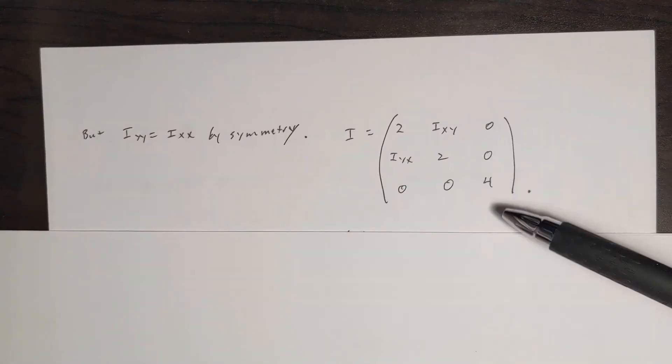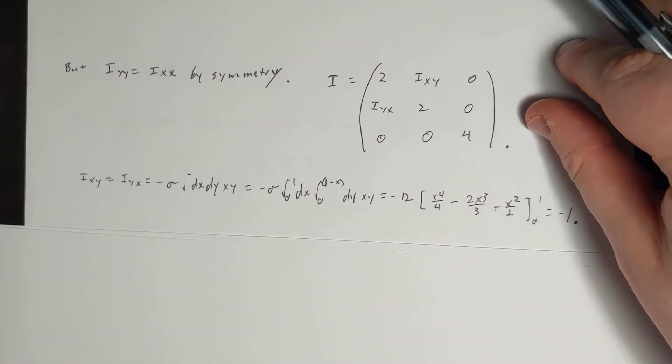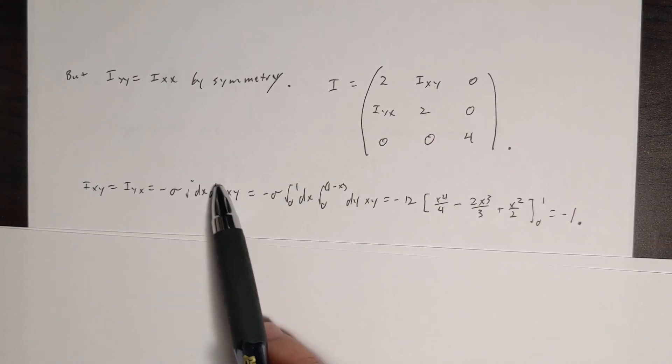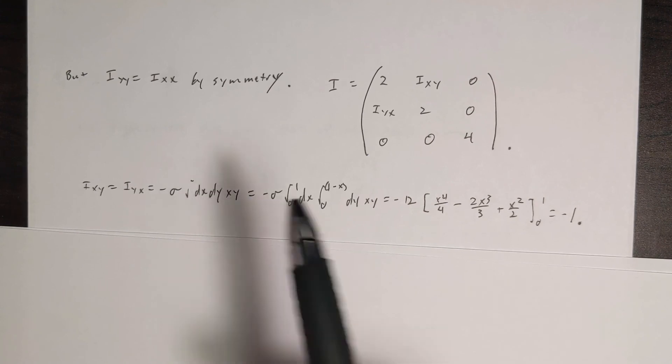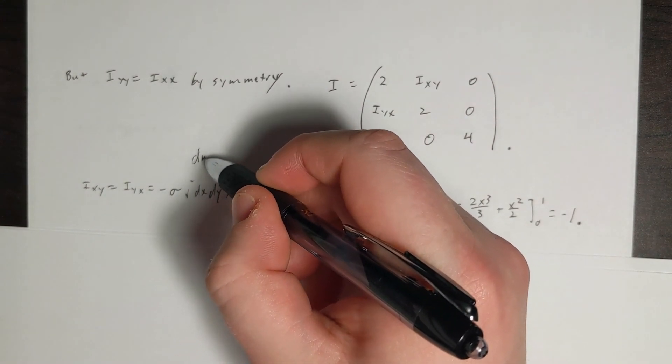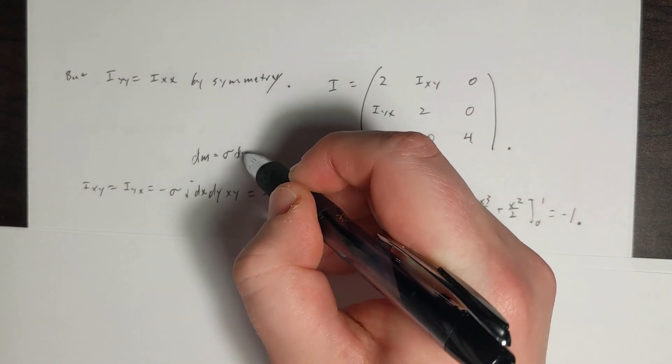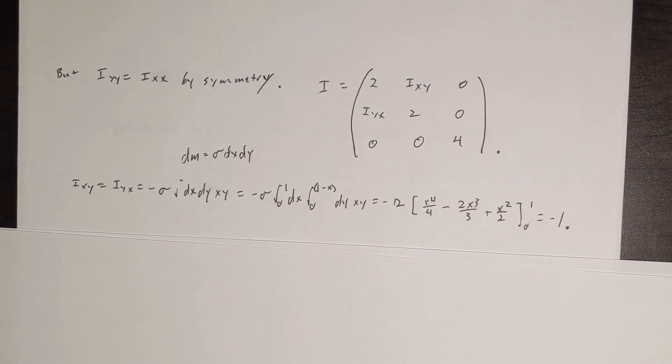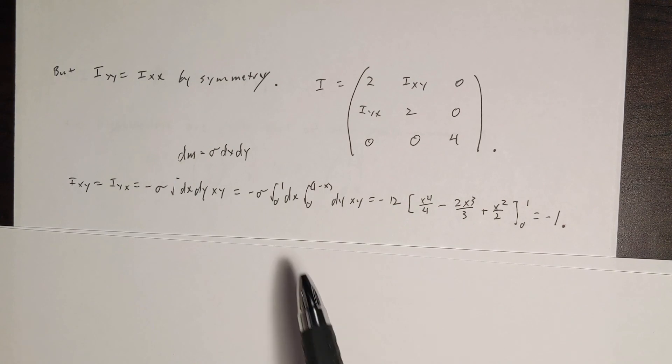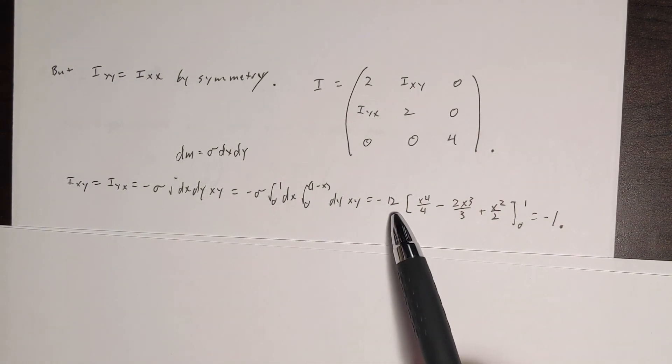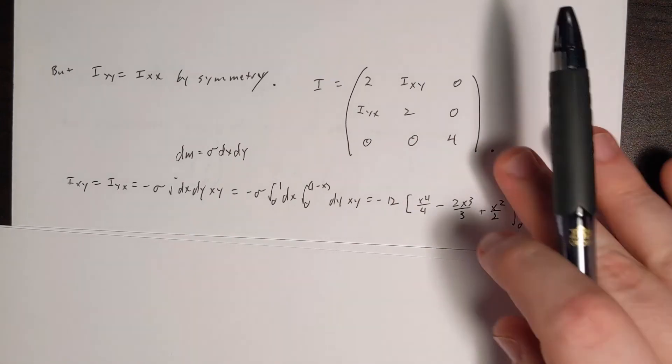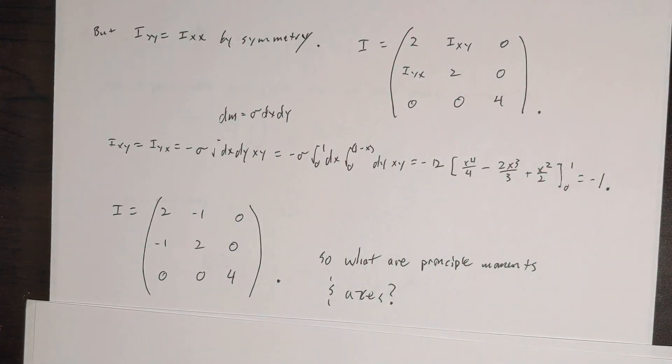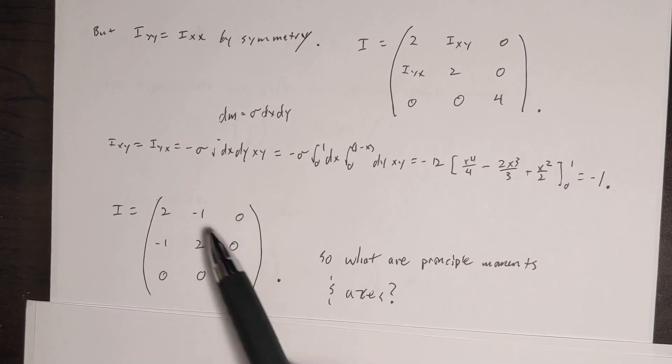So here's I_xy, we know is equal to I_yx, and here's just the basic definition. We have our bits dm. The dm is equal to sigma dx dy. That's where these comes from. So again, very simple integral, and whenever you plug in for sigma, you will get minus 1. So that seemed rather quick. Now we have our moment of inertia tensor.